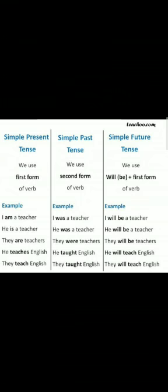In short, for simple present tense we use AM, IS, ARE. For simple past tense we use WAS, WERE, HAD. And for simple future tense we use WILL BE or SHALL BE.